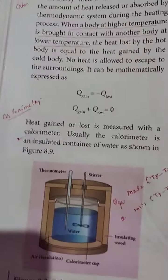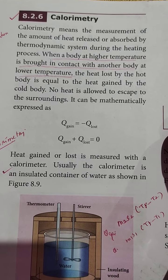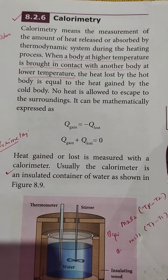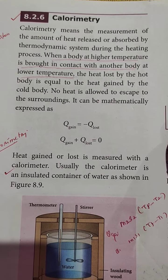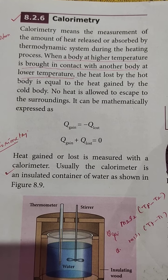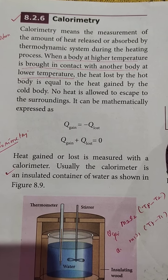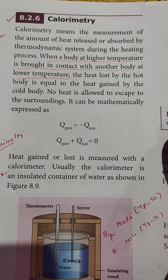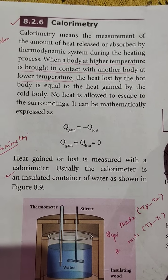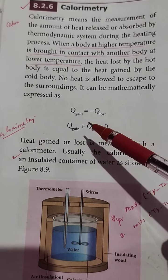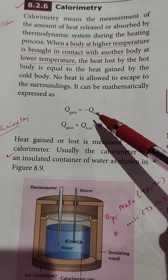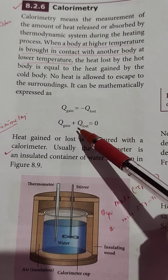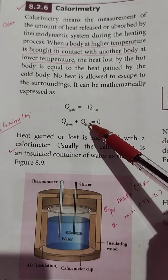Next we are going to move to topic 8.6: Calorimetry. Calorimetry means the measurement of the amount of heat released or absorbed by a thermodynamic system. During the heating process, when a body at high temperature is brought into contact with another body at lower temperature, the heat lost by the hot body is equal to the heat gained by the cold body, provided no heat is allowed to escape to the surroundings. Mathematically, heat energy gained plus heat energy lost equals zero.